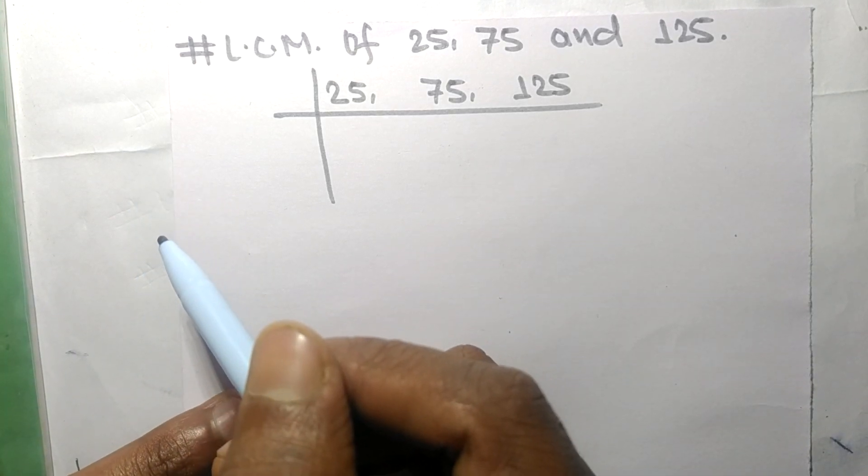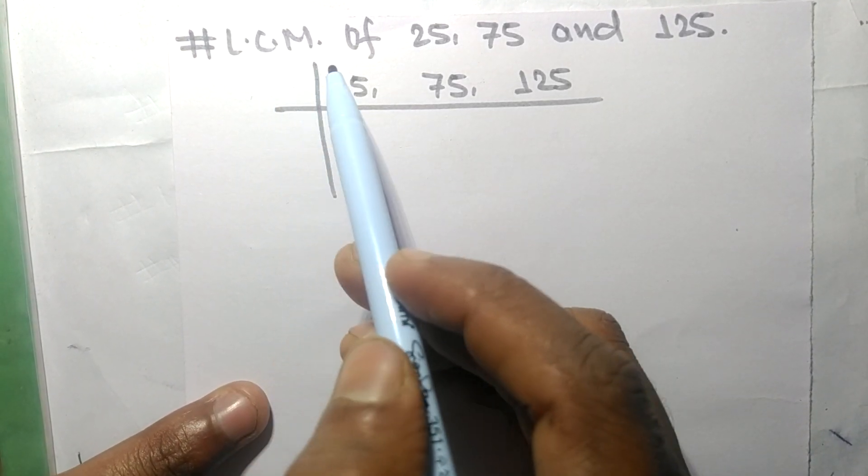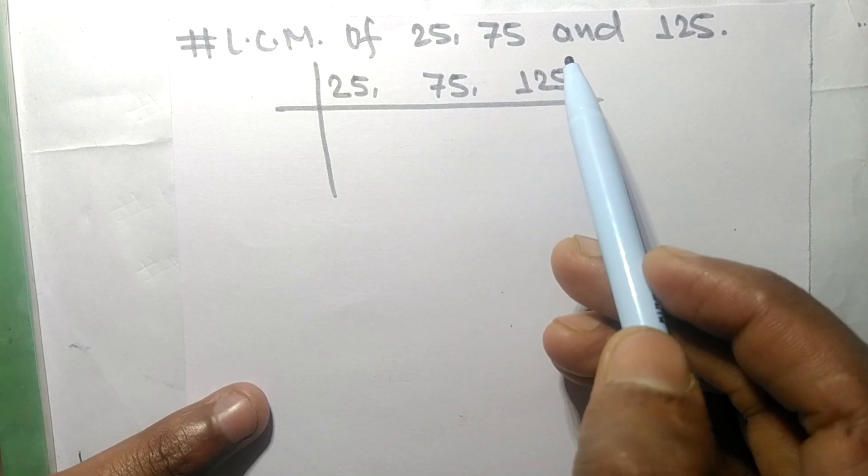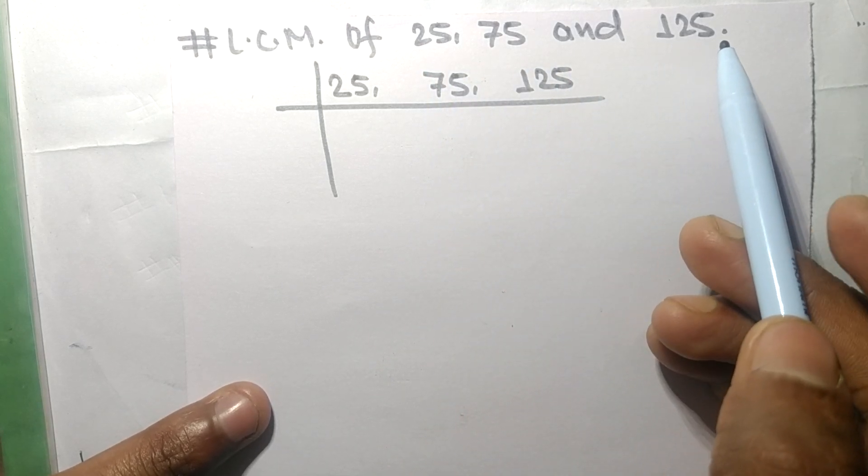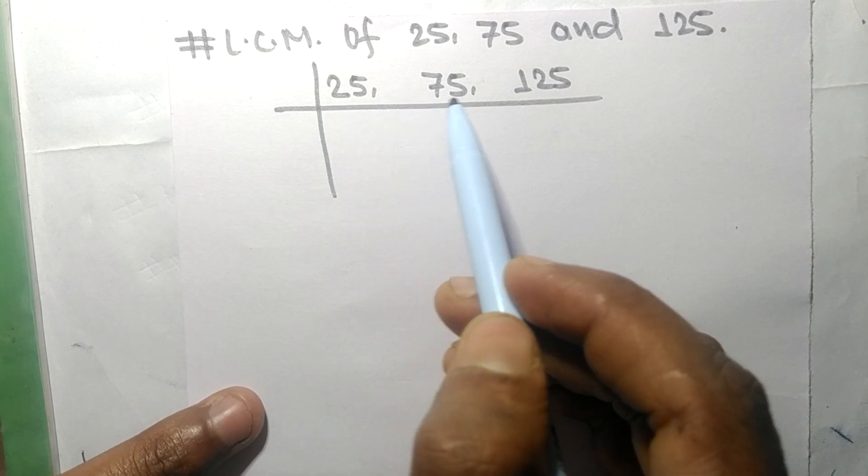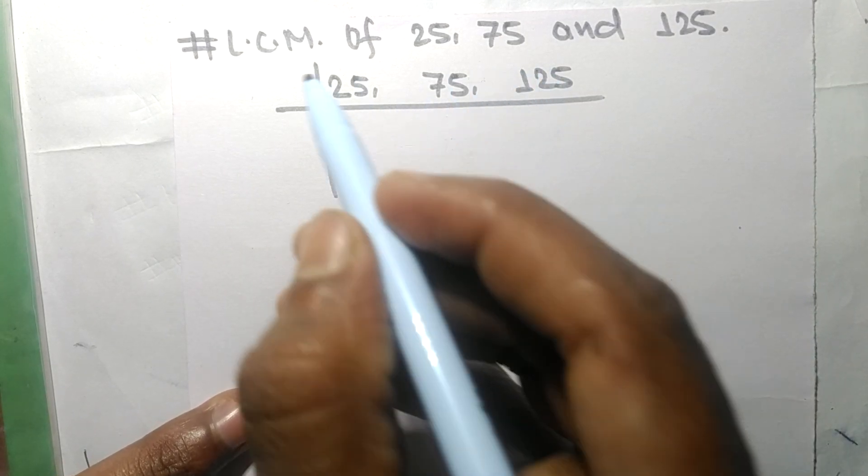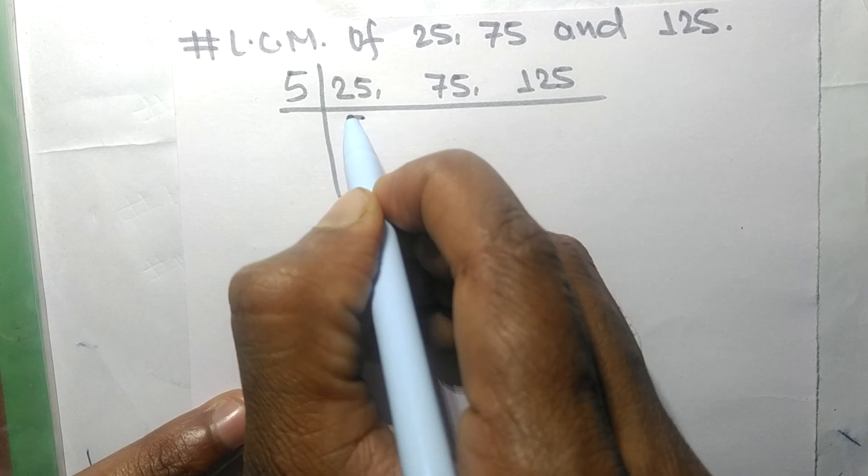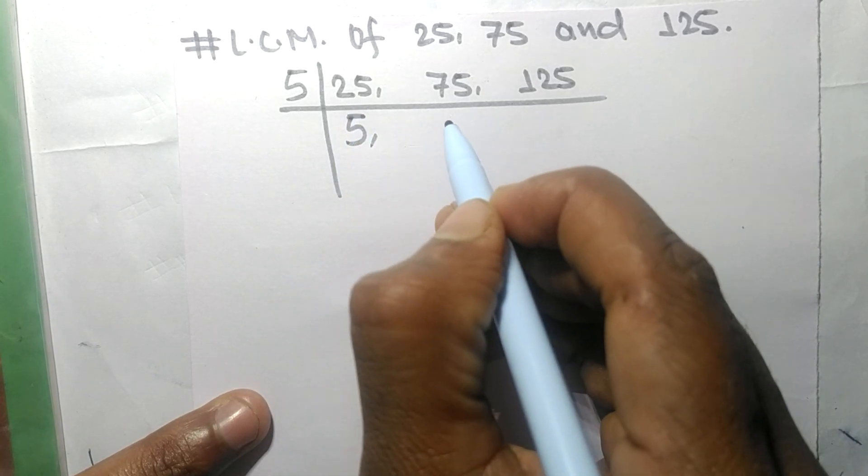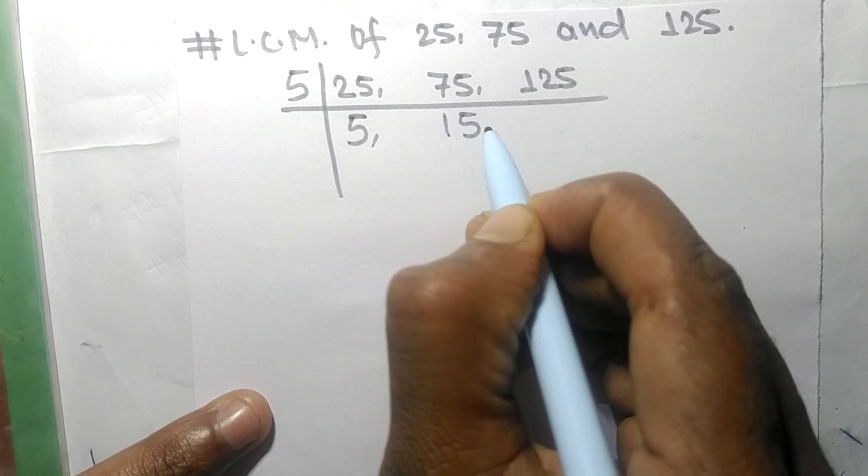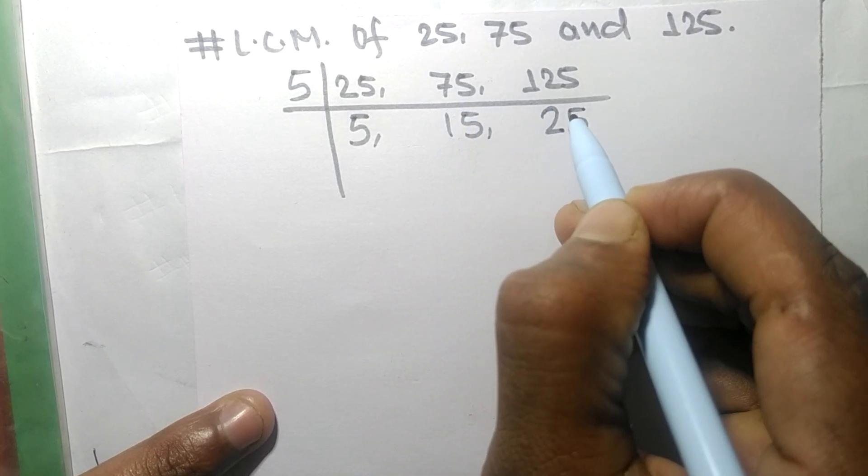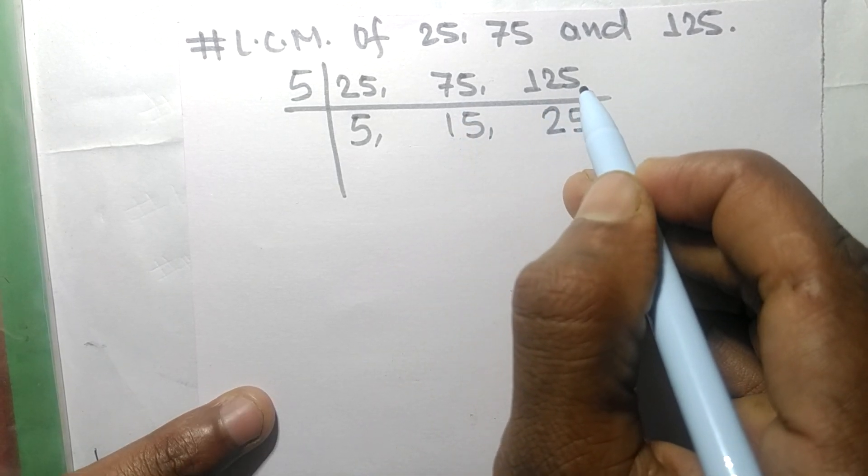So today in this video we shall find LCM of 25, 75, and 125. These all numbers are exactly divisible by 5. So 5 times 5 means 25, 5 times 15 means 75, 5 times 25 means 125.